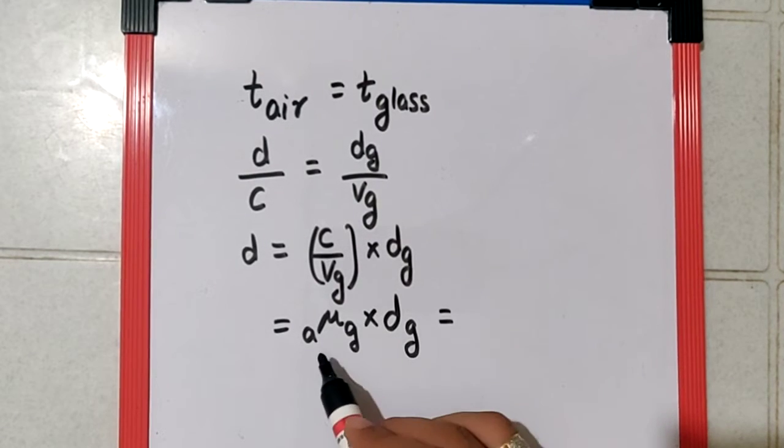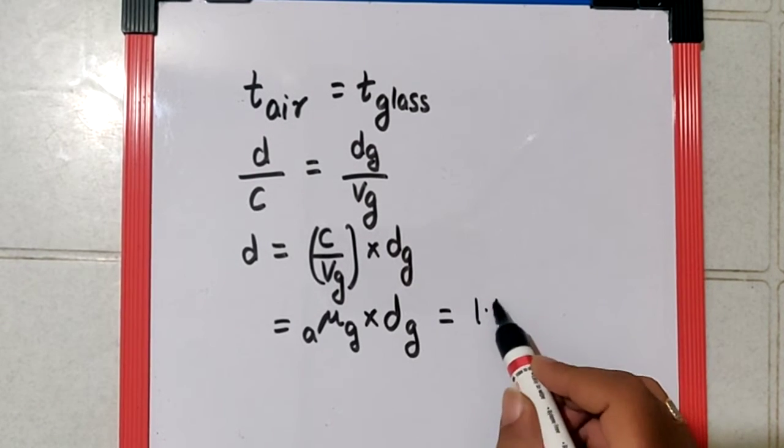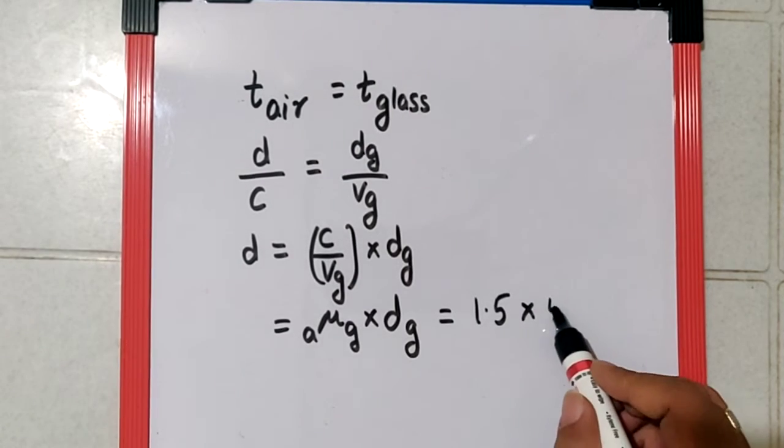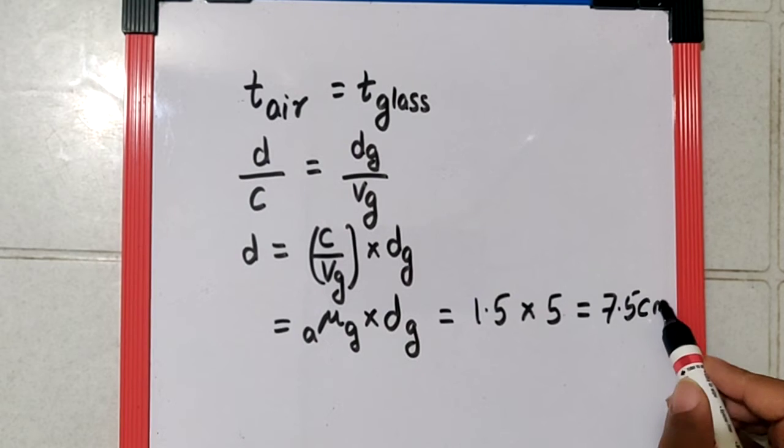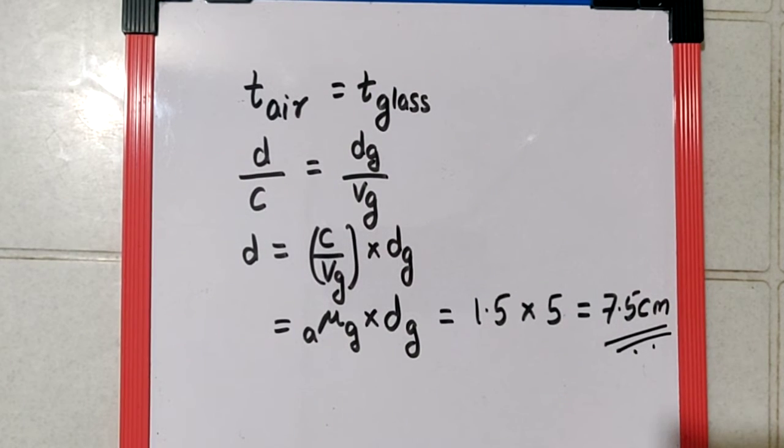Now the value given here is the refractive index as 1.5 and the distance of the glass is 5 cm. So when you multiply you get the answer as 7.5 cm, which is the final answer.